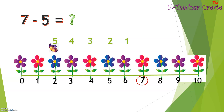Now let's count again. Let's count backwards from seven, five times: one, two, three, four, five. Now the answer is two.